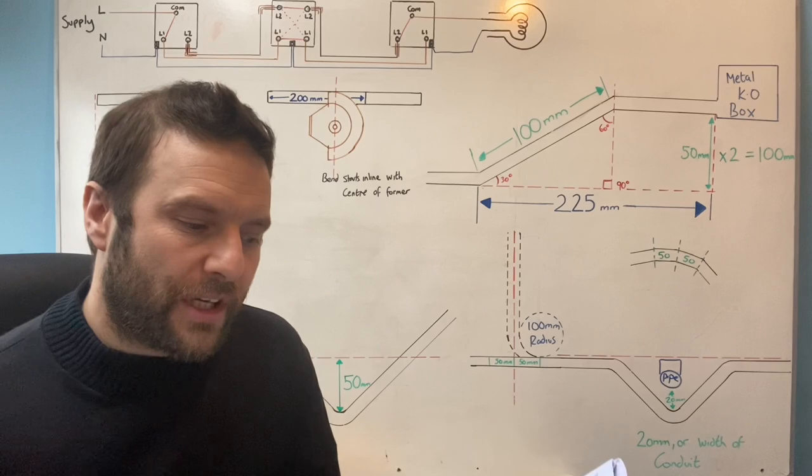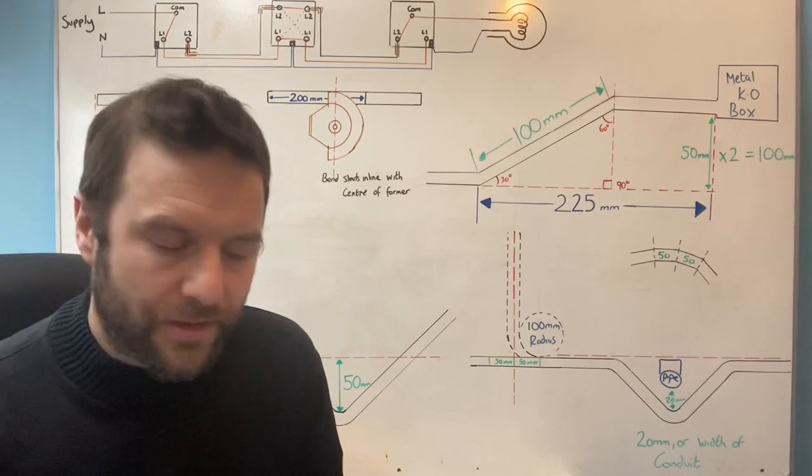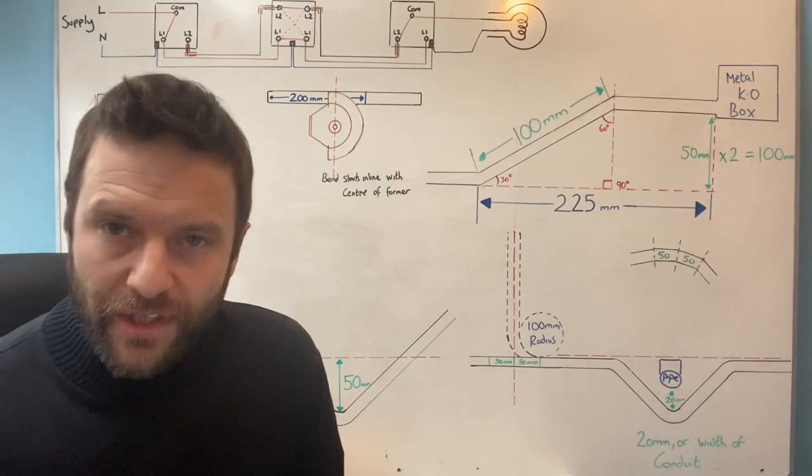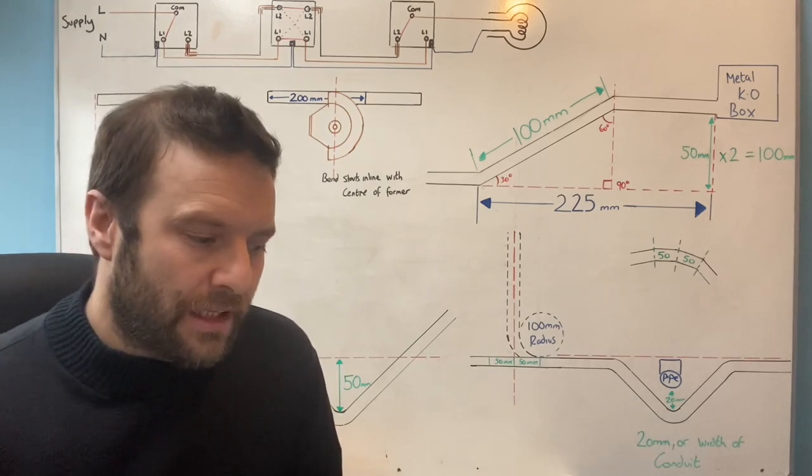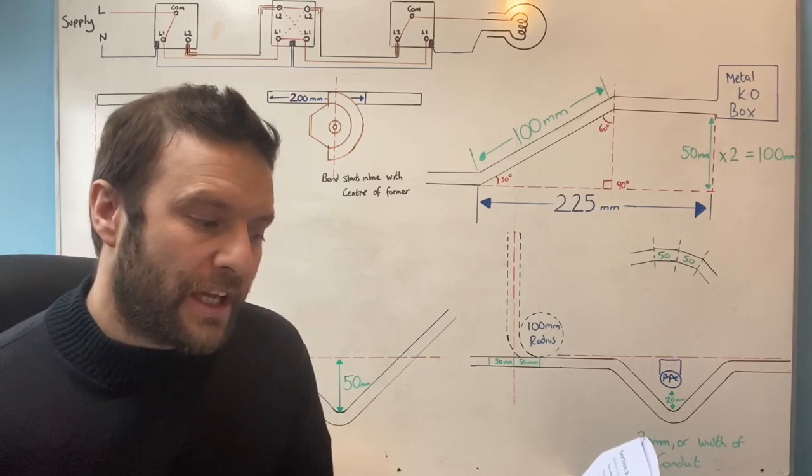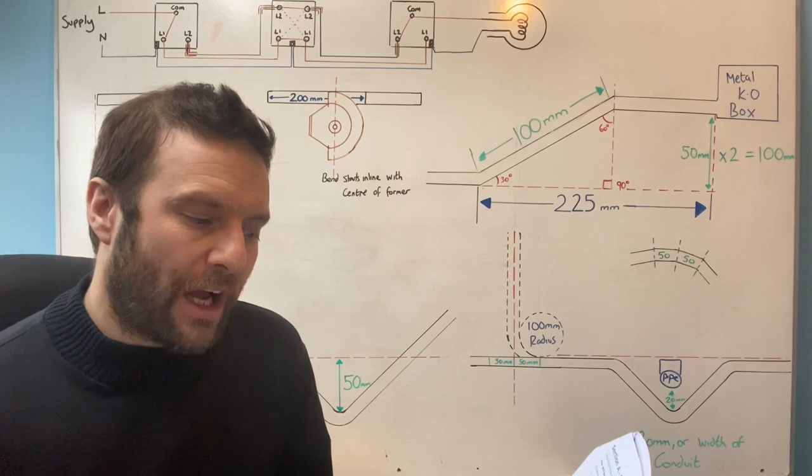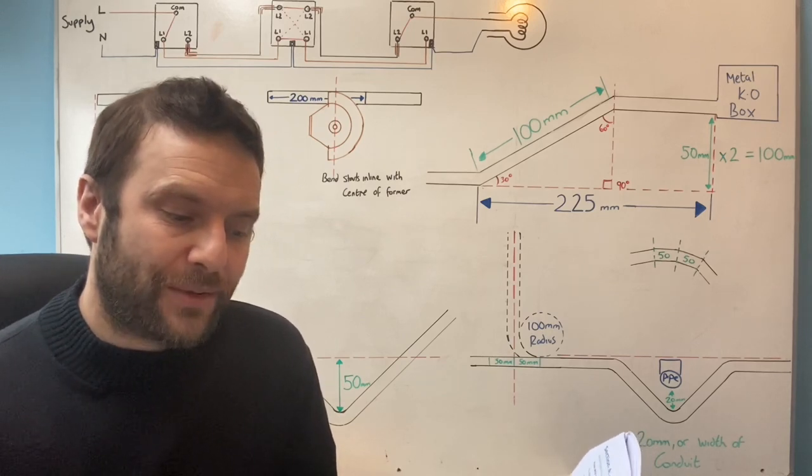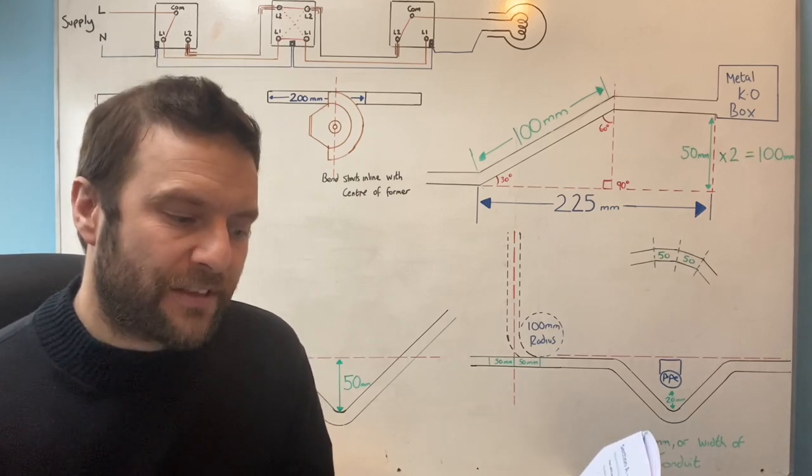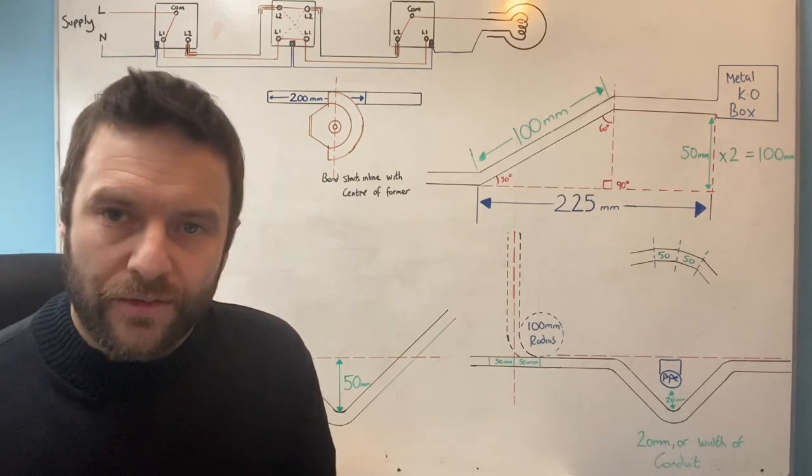Candidates do not install the circuits in accordance with the requirements of BS 7671, so basically you're not installing to the regs. Candidates do not install the circuits in accordance with the installation specification. Not following the specification does not mean that the work you have completed is unsafe. However, if the customer has specified that the work is carried out a certain way and you do not follow that, they would not have to pay and work could have to be taken out and replaced. An example would be if the customer specified white conduit and you fitted black.